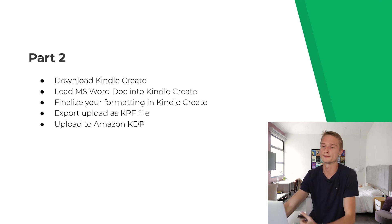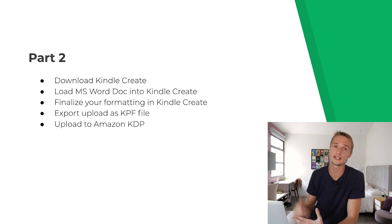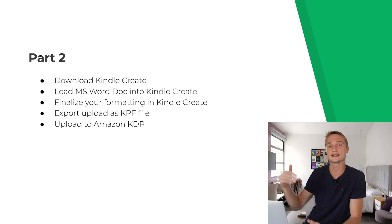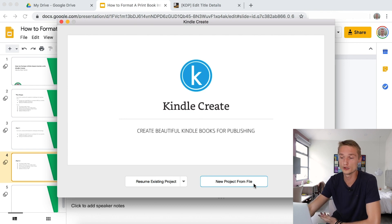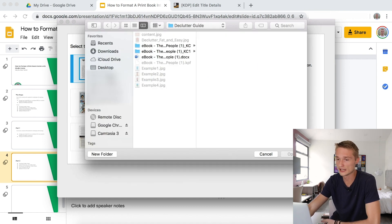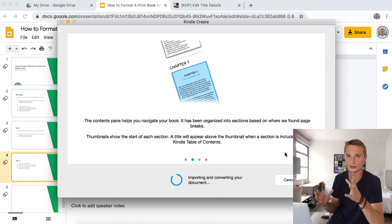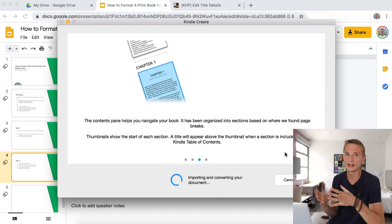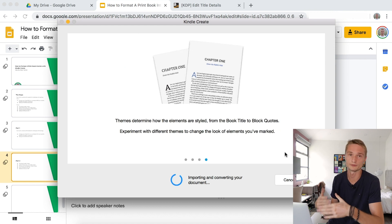Then we can go over to Kindle Create. If you haven't already, go ahead and download Kindle Create — you can just Google it, or I'll leave a link down in the description. Download and install it, and then we can continue our work with that Microsoft Word file. Open up Kindle Create, click New Project from File, then click Choose Your File. Navigate to wherever your file is and open it. It's going to import your Word file and start converting it to the Kindle Create format so you can start formatting and playing around with different things.